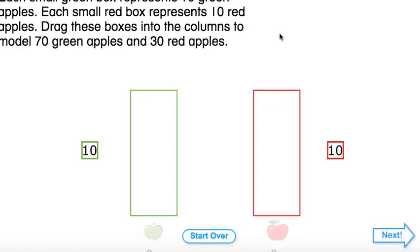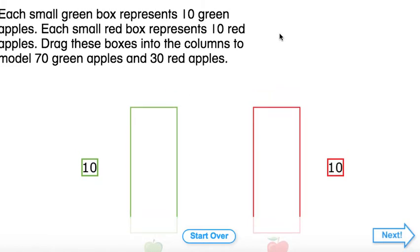Each small green box represents 10 green apples. Each small red box represents 10 red apples.